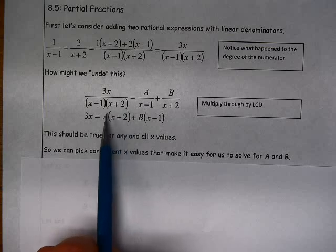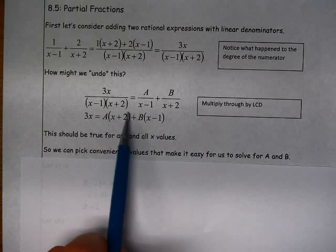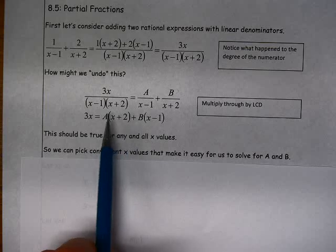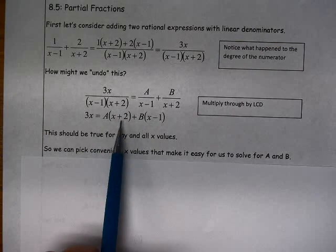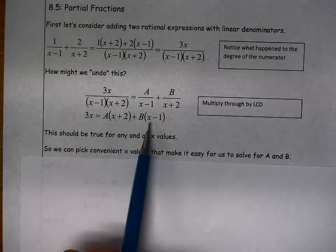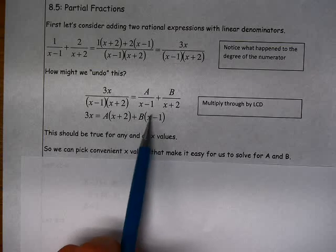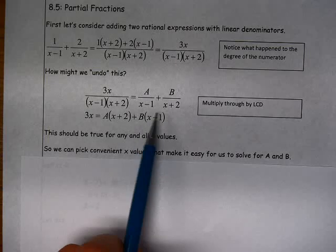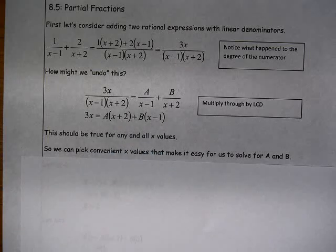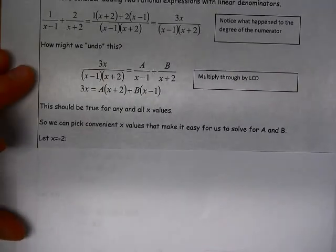You can see here that if I make x equal to negative 2, this entire term is 0, so the A term disappears. And if I were to make x equal to 1, then this entire term would be 0, so the B term would disappear. So I'm going to choose those one after the other.